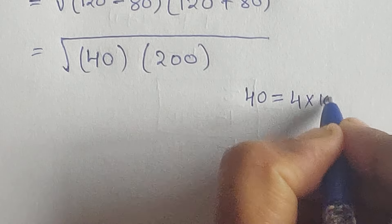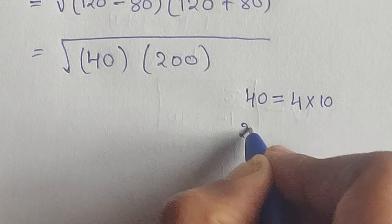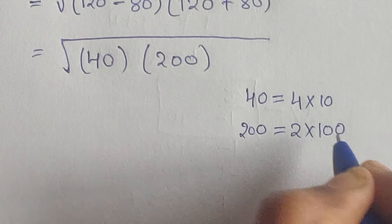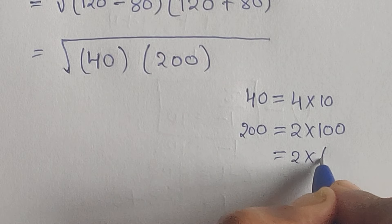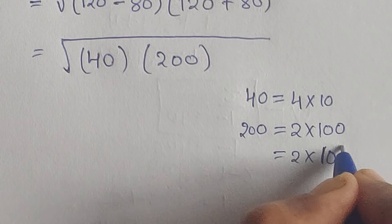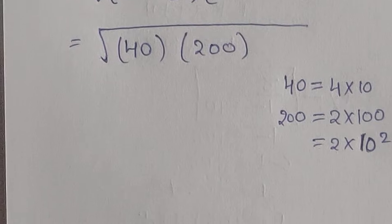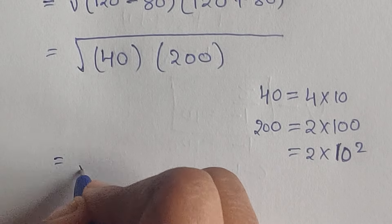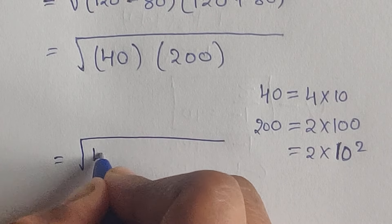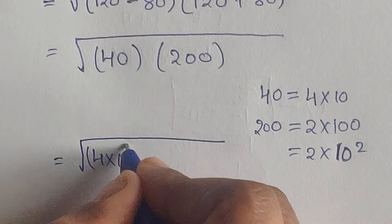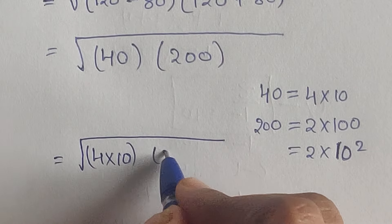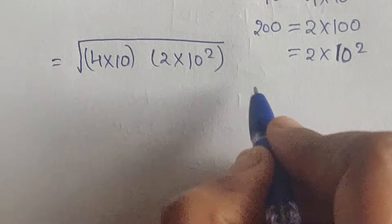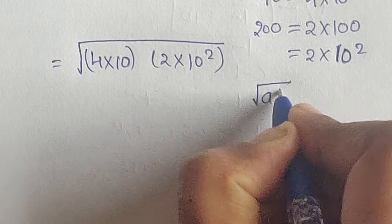Now, 40 can be written as 4 times 10, and 200 can be written as 2 times 100, where 100 equals 2 times 10 squared. So we have the square root of (4 times 10) times (2 times 10 squared).